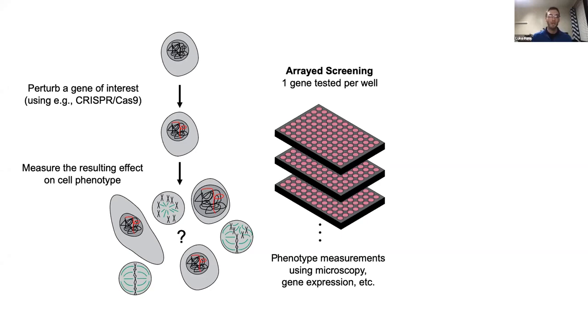You can make all kinds of different measurements, including using microscopy, measuring gene expression changes, etc. The downside for arrayed screening is that it's difficult to scale and often requires laboratory automation to test large lists of genes.